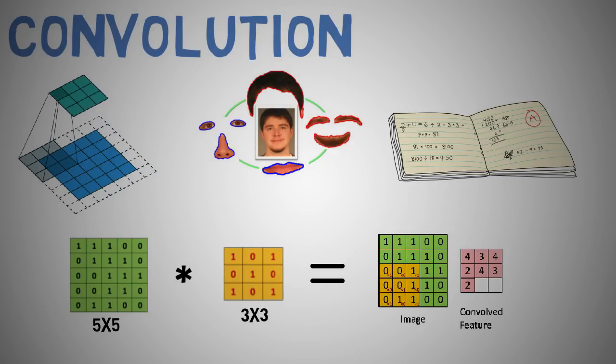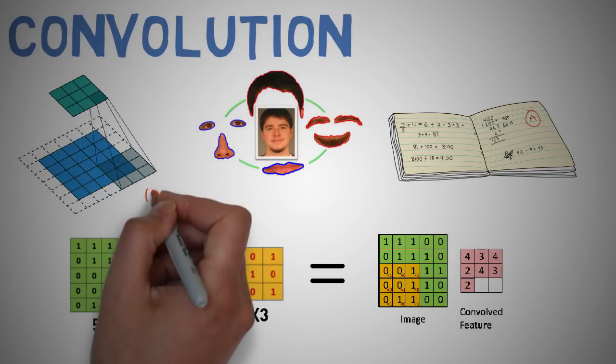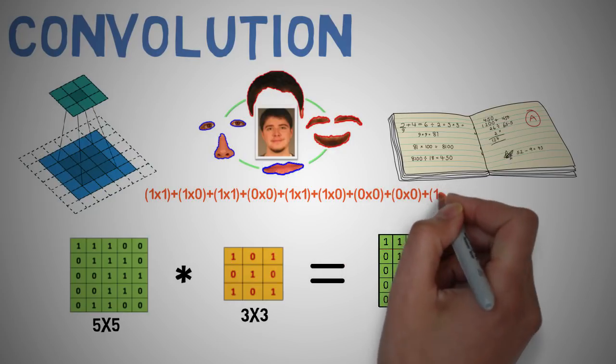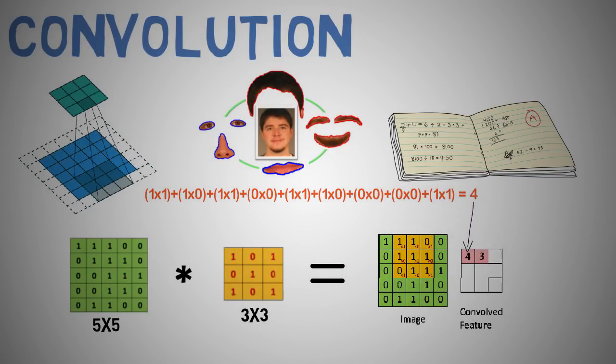Let's take a moment to understand how the computation is being done. We'll slide the orange matrix over the original image green by 1 pixel which is also known as a stride, and for every position we'll calculate the element-wise multiplication between the two matrices, and then we add the multiplication outputs to get the final integer which forms a single output from the output matrix in pink. Note that the 3 by 3 matrix sees only the part of the input image in each stride. So here we have 1 multiplied by 1 which equals 1 plus 1 multiplied by 0 which equals 0, and then we continue adding all the products until we end up with 4.